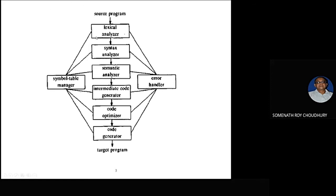One thing I forgot to mention last day: whenever the lexical analyzer passes, a symbol table will be generated. It is shown as a single table, but it is actually not a single table — it is a collection of tables, like a forest of tables in data structure terms. The symbol table has all the features of each variable: what type it is, what the scope is, and all related details.